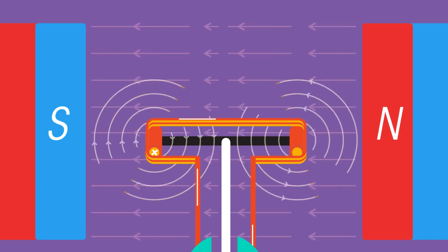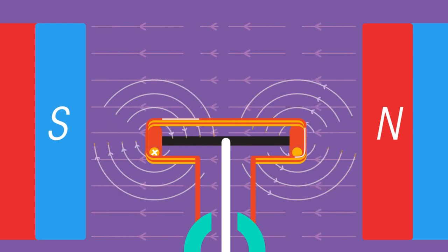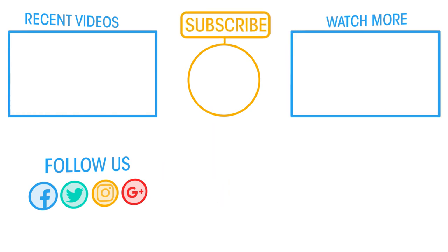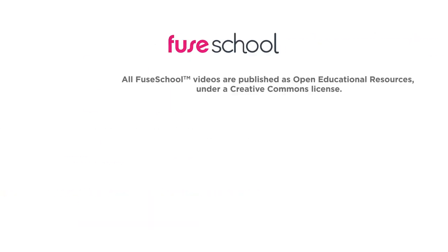This is done with a split ring commutator, but the exact details as to how this works we can leave for another time. If you liked the video, give it a thumbs up and don't forget to subscribe. Comment below if you have any questions. Why not check out our few school app as well. Until next time.